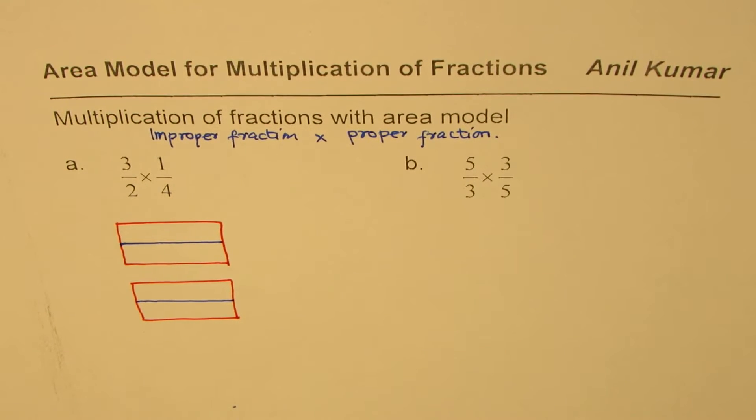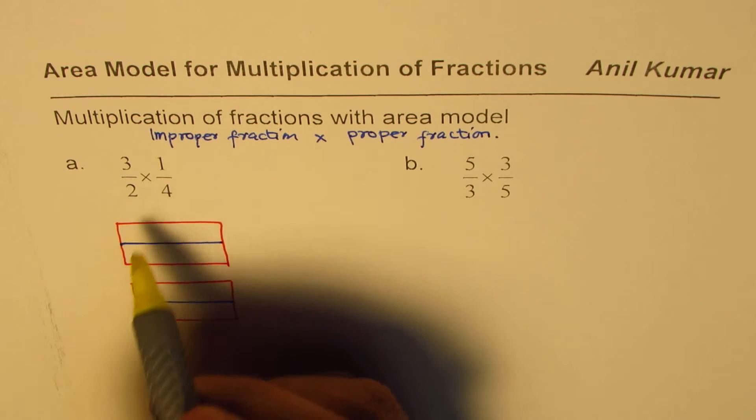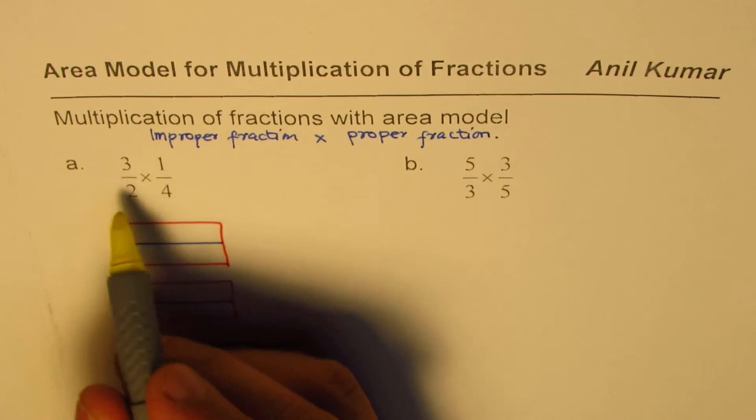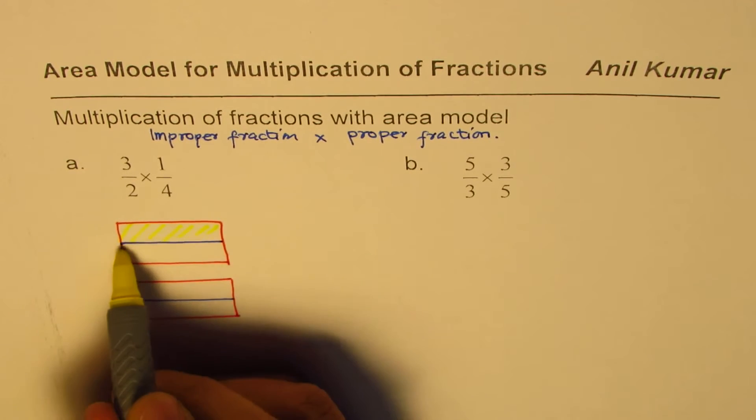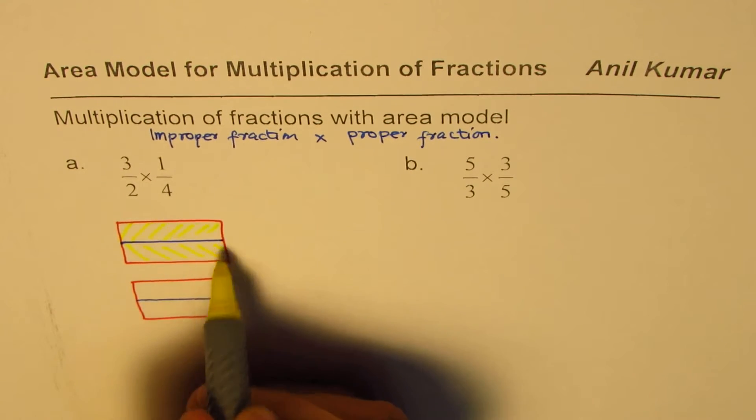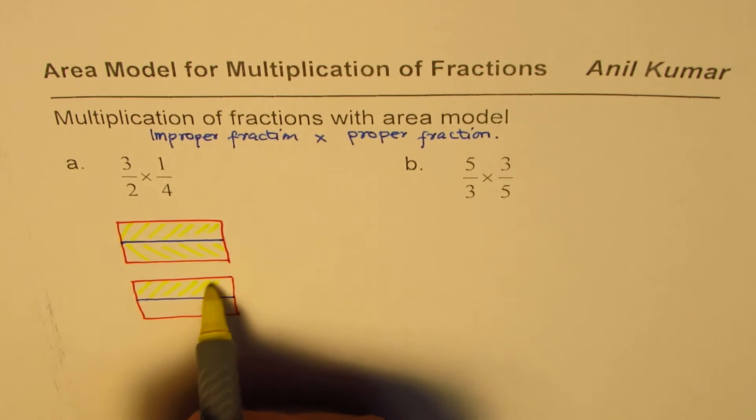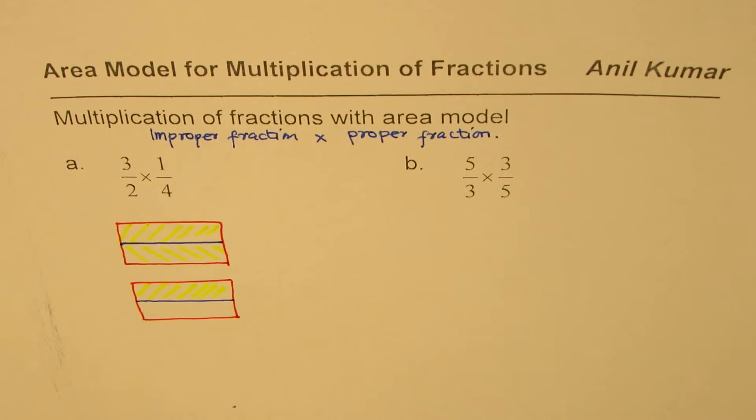Now once we have this, we can divide, and now we can take three halves, 3 over 2. So that is one half, this is the second half, and that's the third half. So 3 over 2.